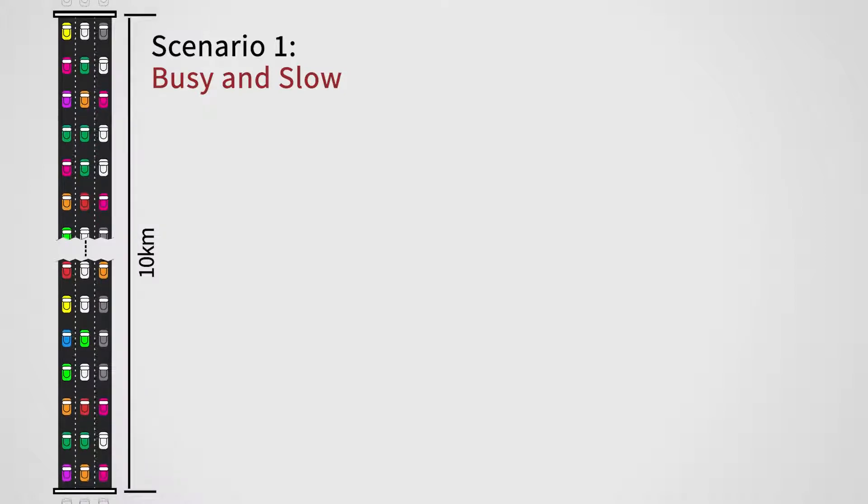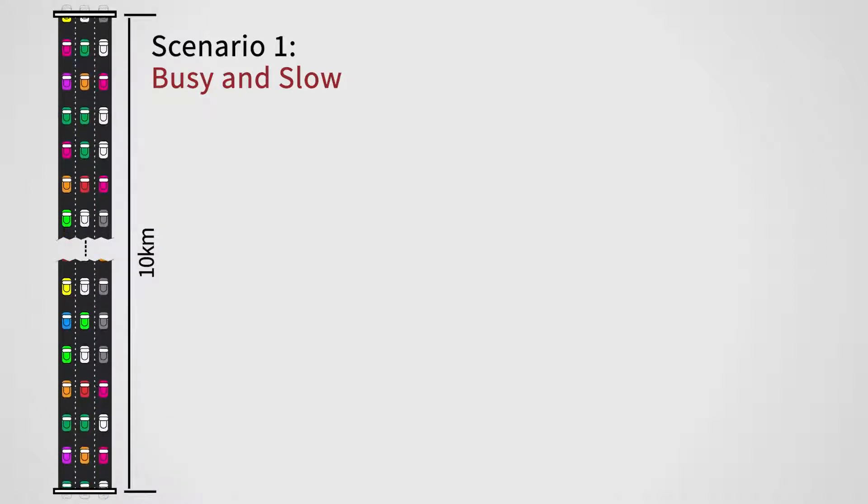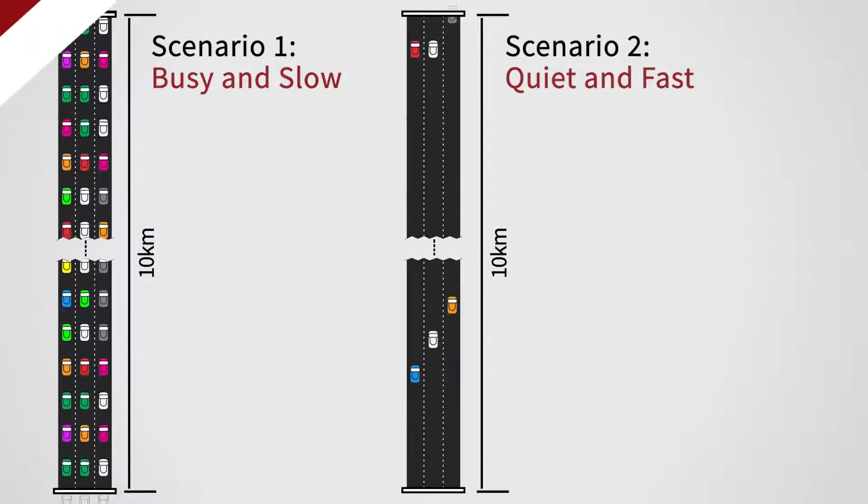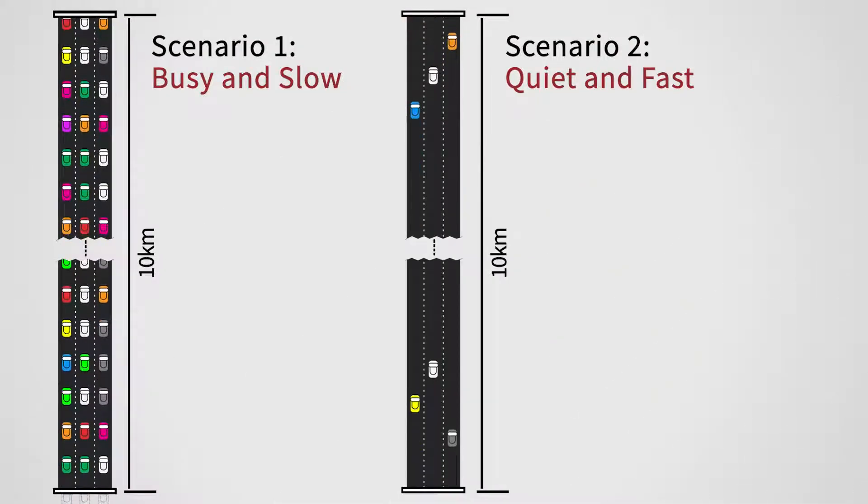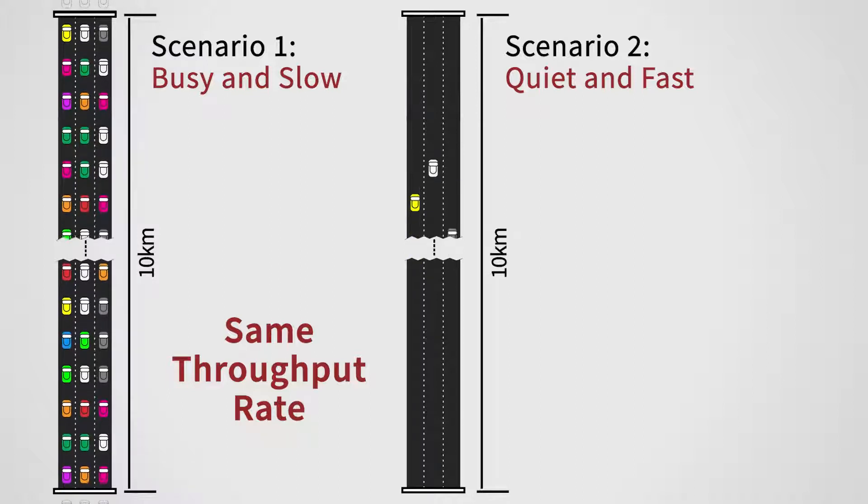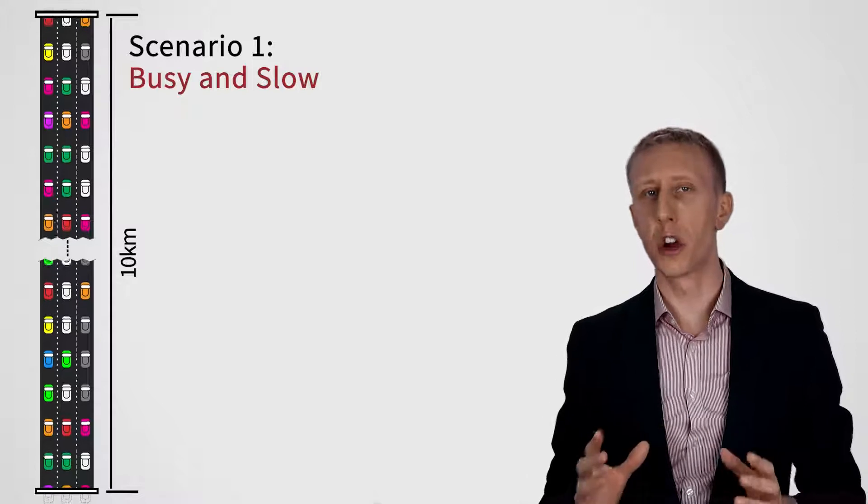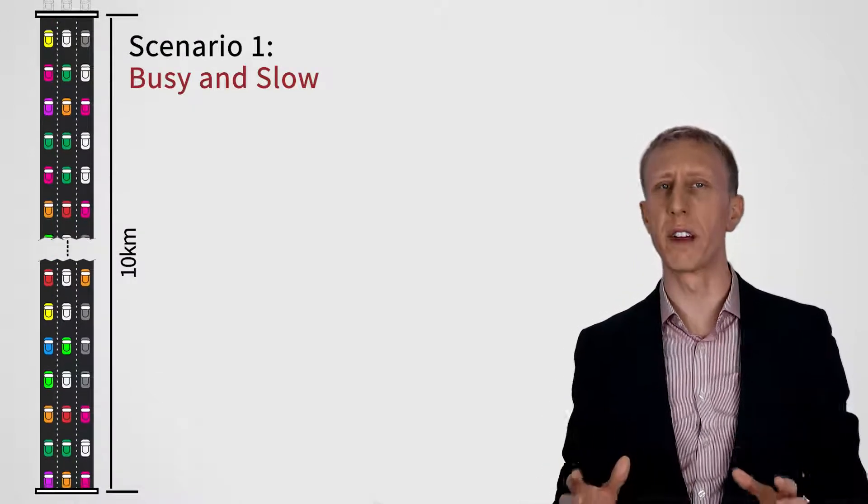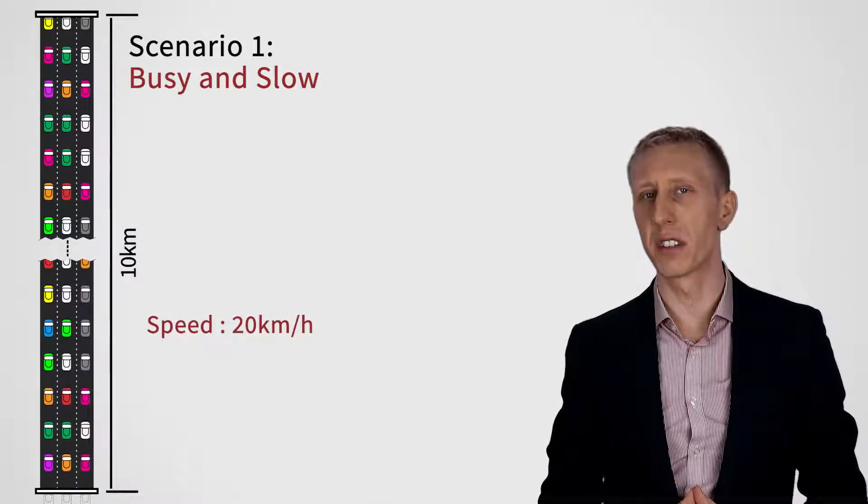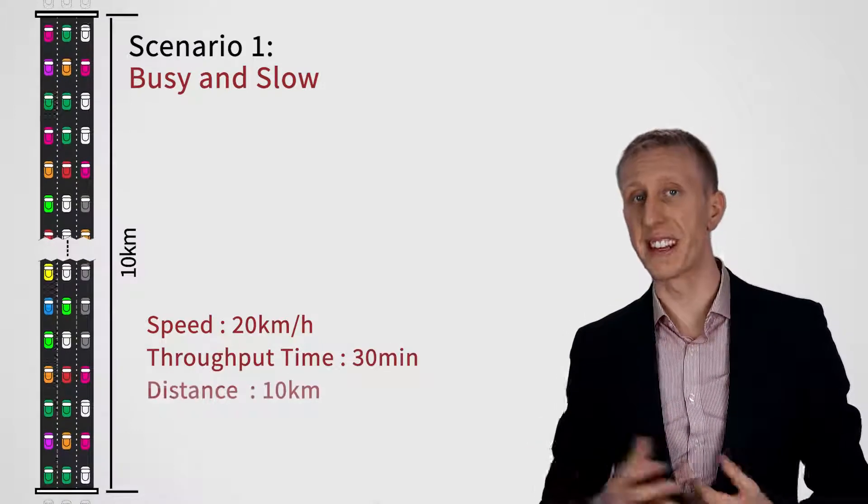On one day, the toll road is super busy with very slow-moving cars, and on another day, it's very quiet with cars whizzing along at top speed. But in both of these examples, the throughput rate, how many cars per hour get through our system, is the same. On the first day, on the left, the toll road has got really busy and full of cars moving very slowly, all at just 20 kilometers per hour. So an individual car takes 30 minutes to drive the 10 kilometers.